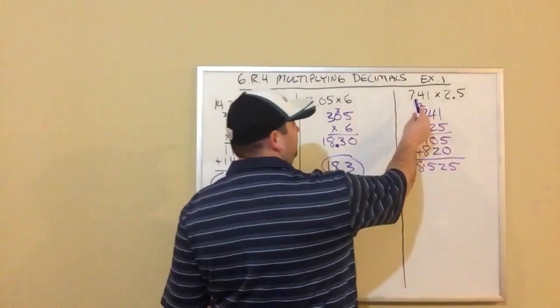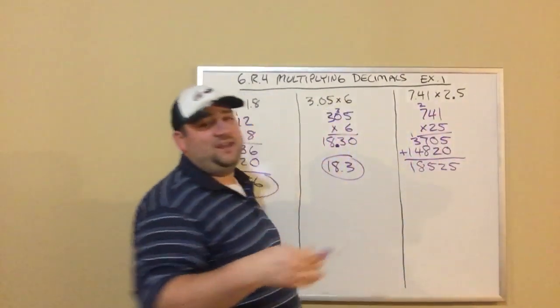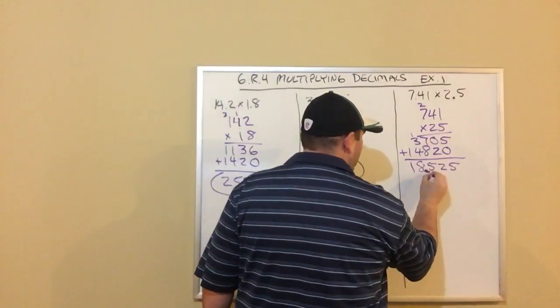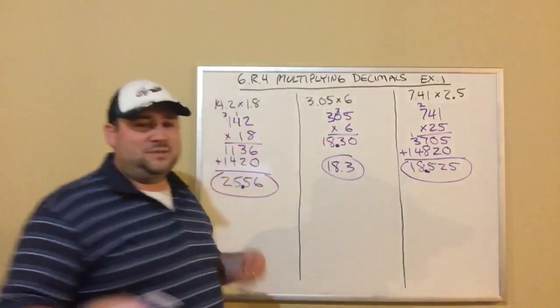Finally, I'm going to figure out where my decimal point goes. I go back to the original problem. One, two, three digits are after the decimal points. So that means my answer has to have three digits. I got 18.525.